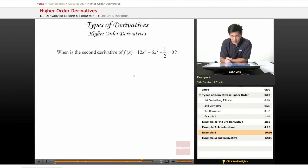But we have to take the second derivative of f of x first. So let's take the second derivative. Starting with the first derivative, 48x cubed minus 12x plus 0.